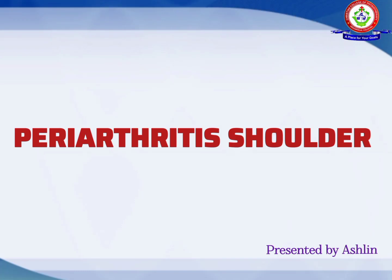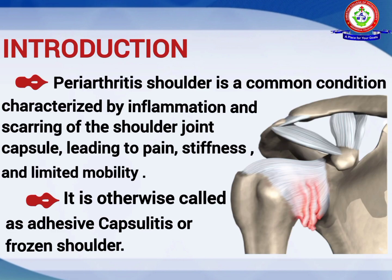Hello friends, today I would like to present a presentation on the topic of periarthritis shoulder. Periarthritis shoulder is a common condition characterized by inflammation and scarring of the shoulder joint capsule, leading to pain, stiffness, and limited mobility. It is otherwise called adhesive capsulitis or frozen shoulder.